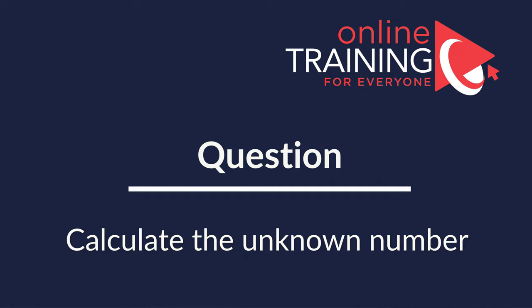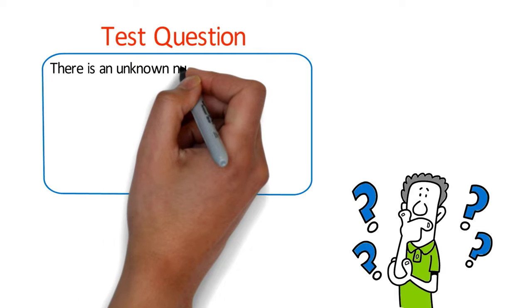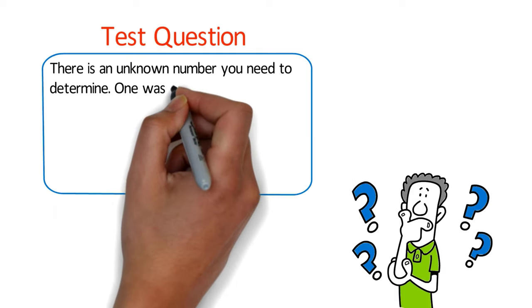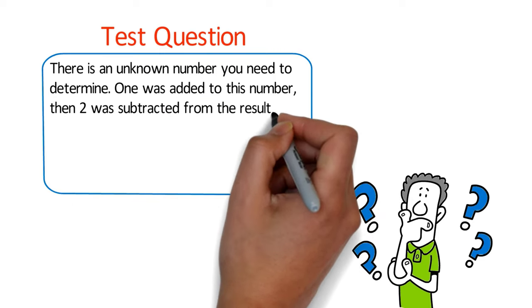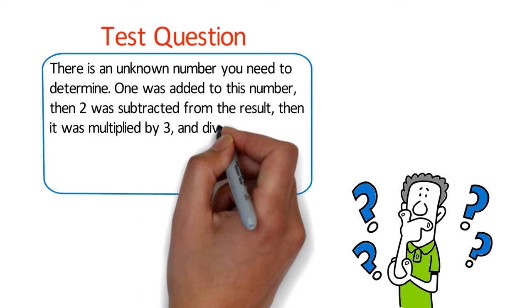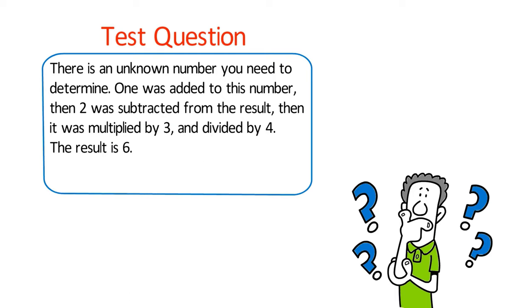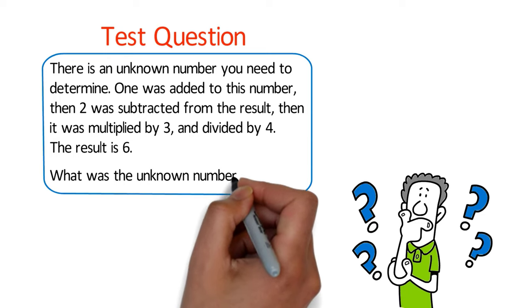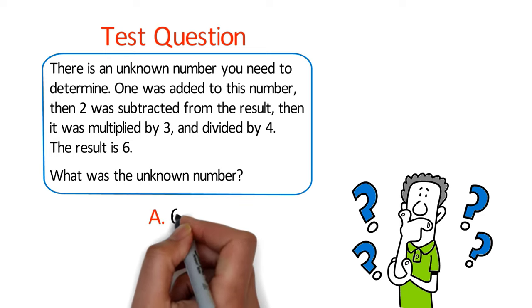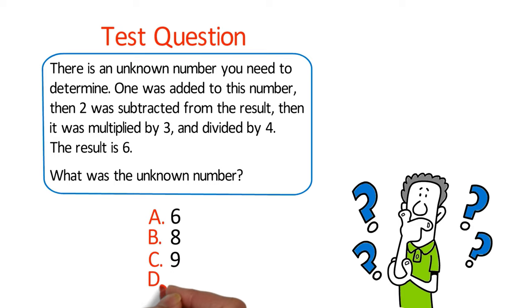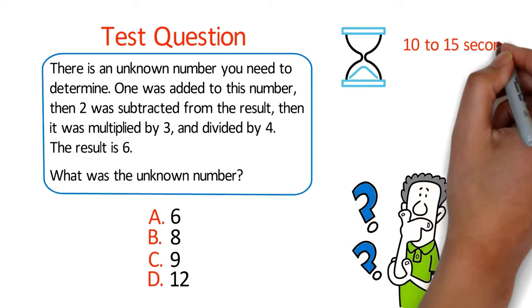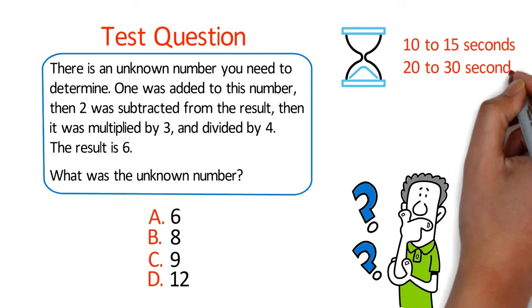Here is a cool, simple question testing mental math. There is an unknown number. One was added to it, then two was subtracted, then multiplied by three, then divided by four — the result is six. What is the unknown number? Choices: A: 6, B: 8, C: 9, D: 12. Give yourself 10 to 30 seconds.